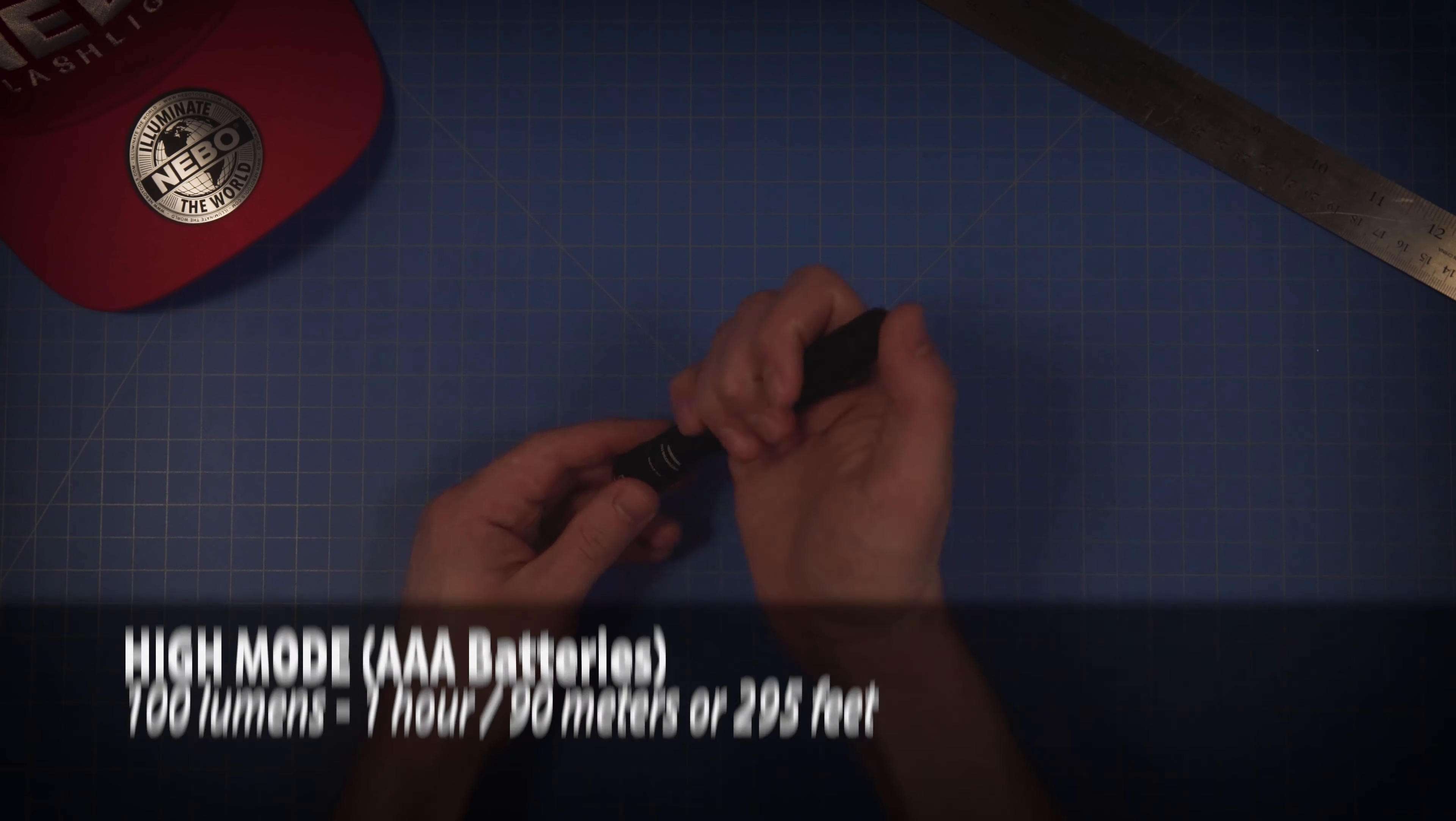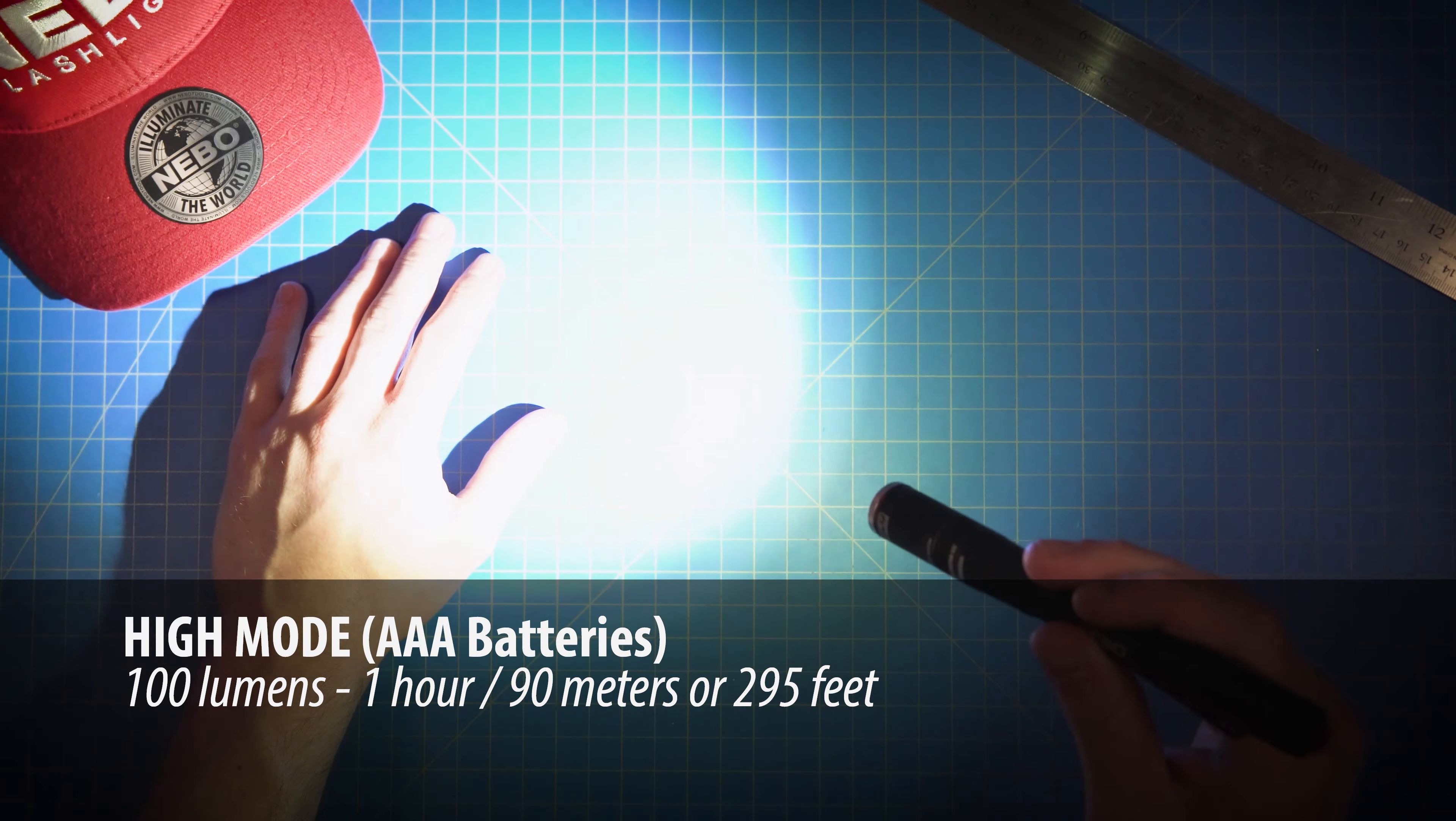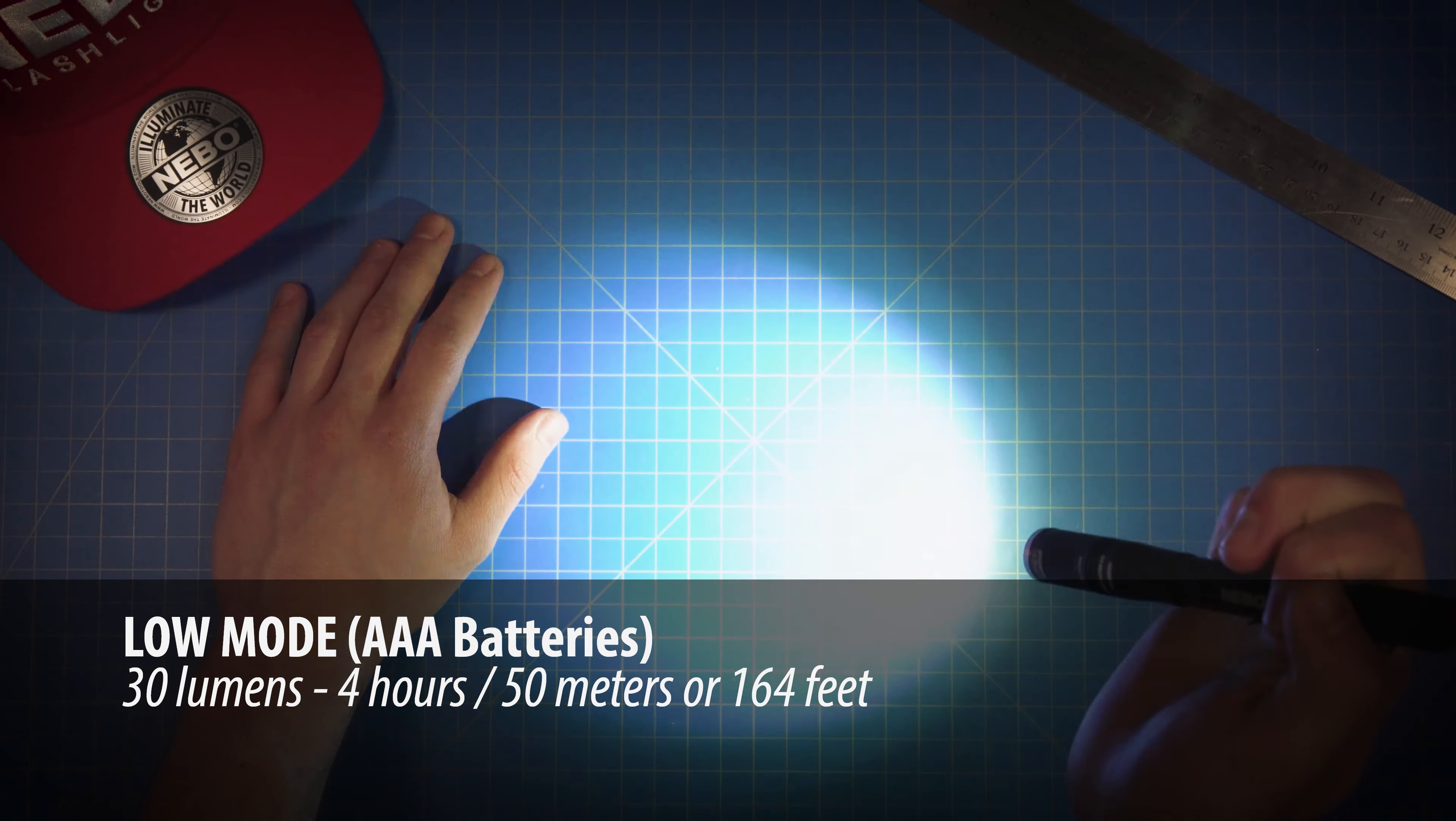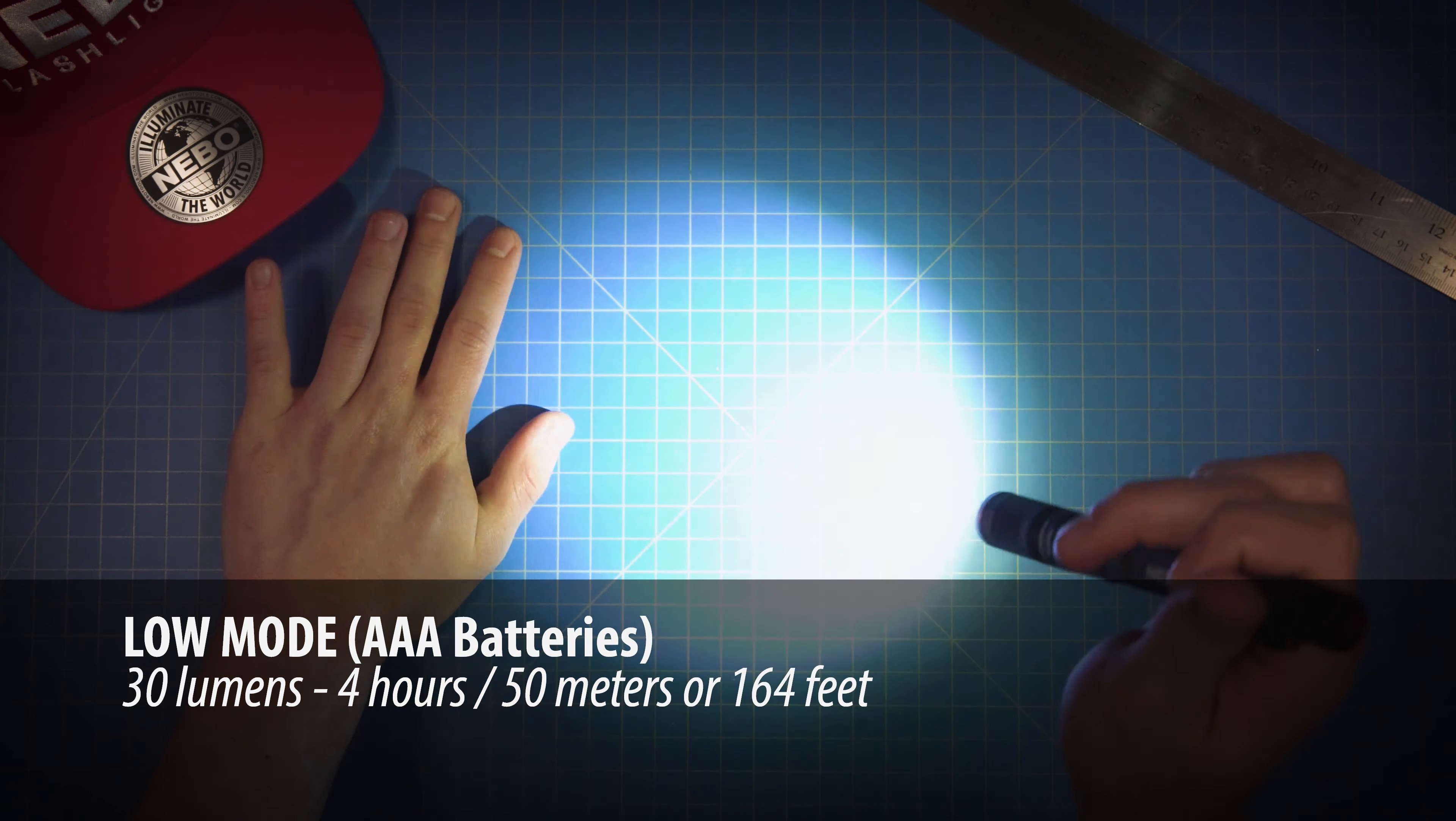Using two AAA batteries, in high mode, the light is up to 100 lumens, shining at a distance of up to 90 meters, or 295 feet, for one hour. In low, it's up to 30 lumens, shining at a distance of up to 50 meters, or 164 feet, for four hours.